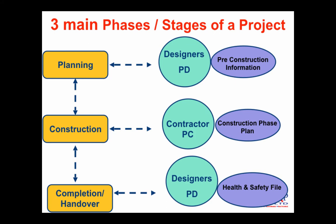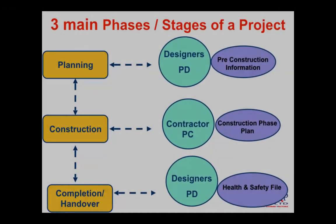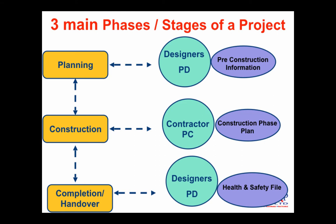Within these phases, there are key players. Planning phase: designers; if more than one contractor, a principal designer. Construction phase: where there is more than one contractor, a principal contractor. Completion. And we talked about the three key documents: first, pre-construction information at planning stage; second, construction phase plan; and finally, the health and safety file. The middle document is the responsibility of the principal contractor; the first and last are the principal designer's. That, in a nutshell, is what CDM application means.